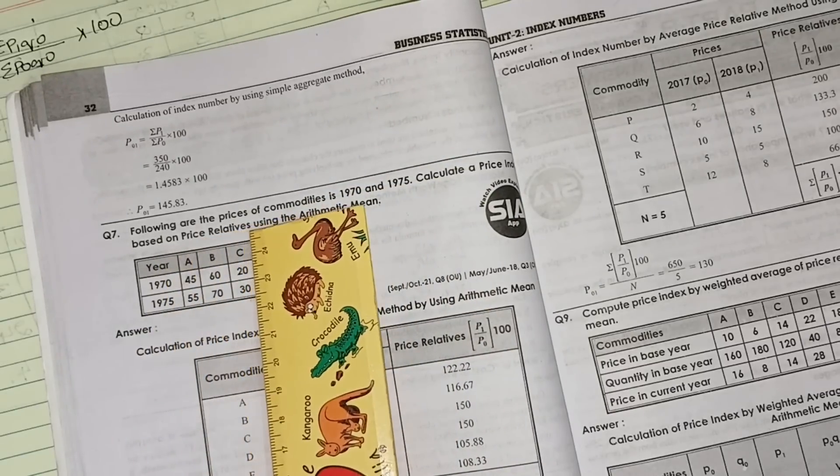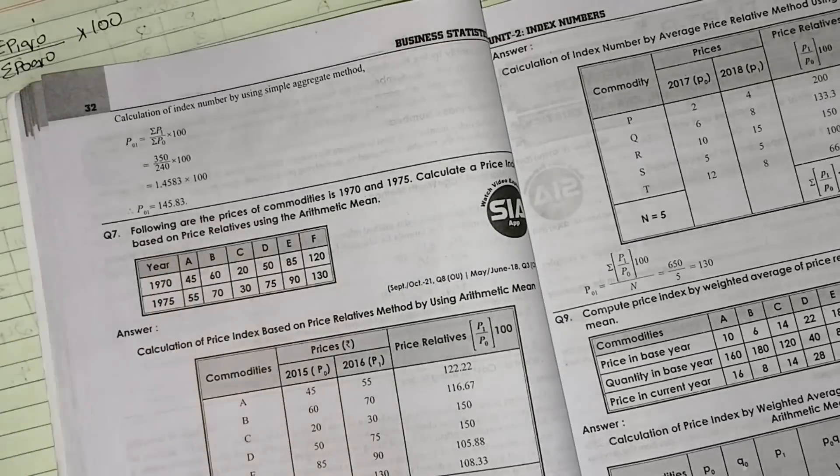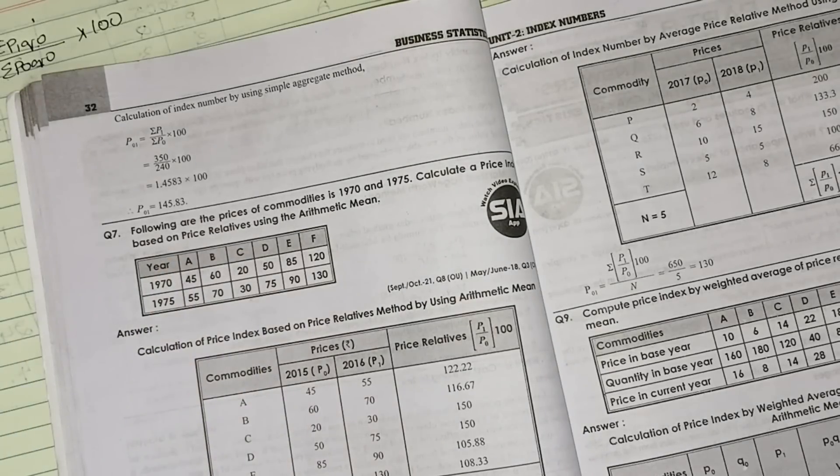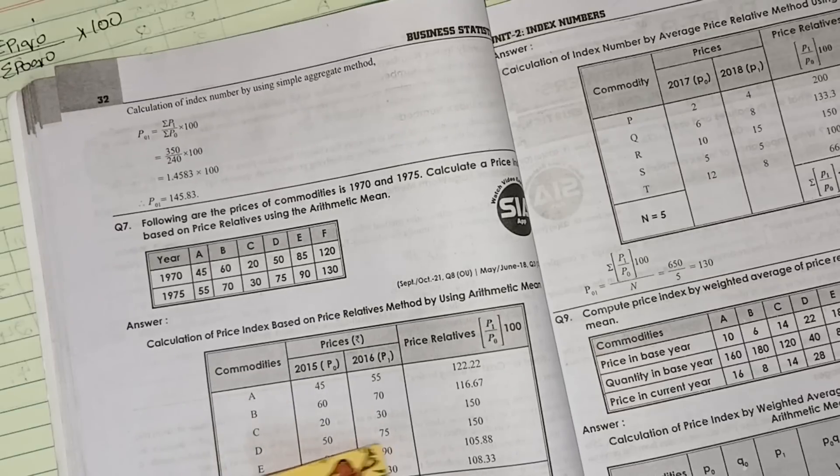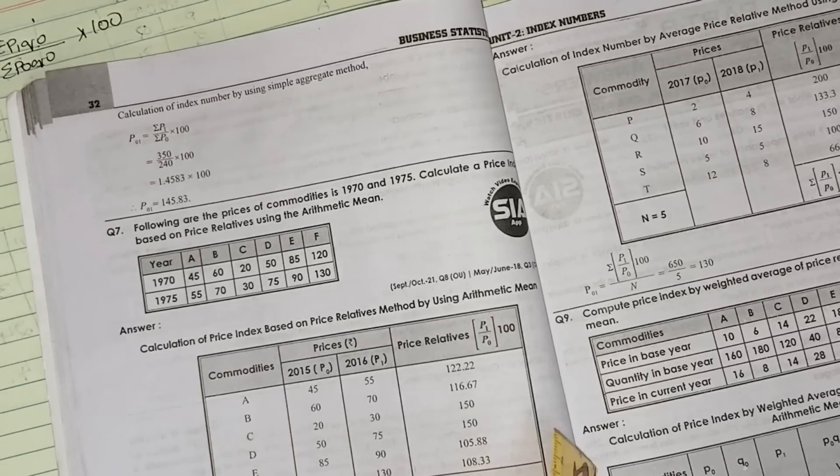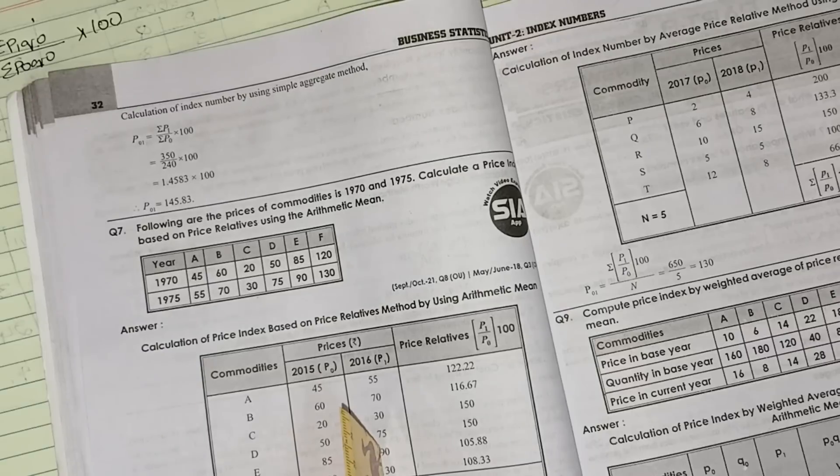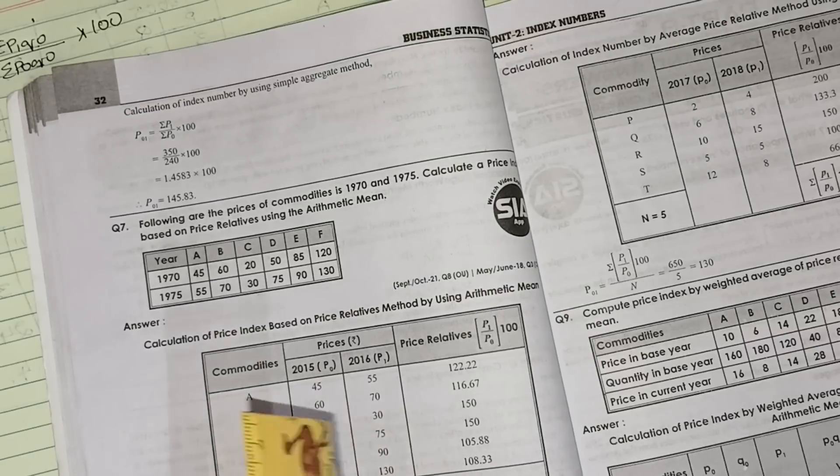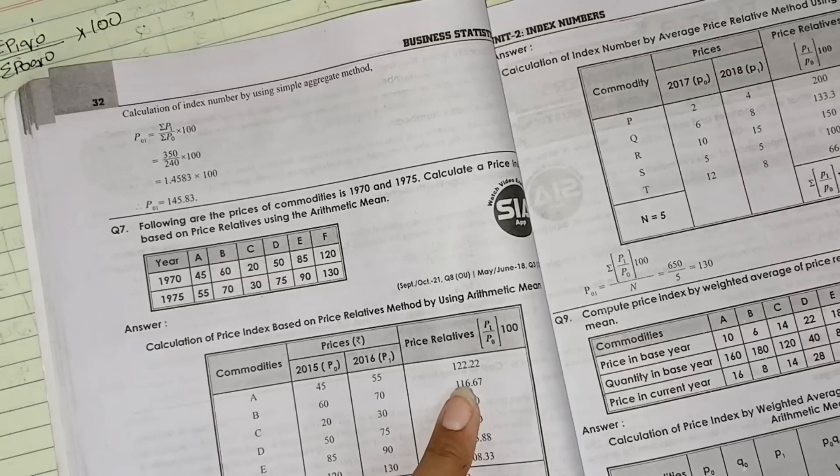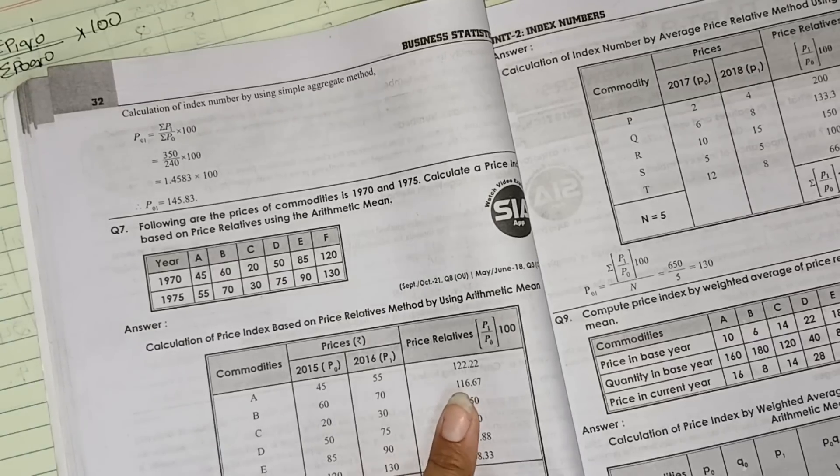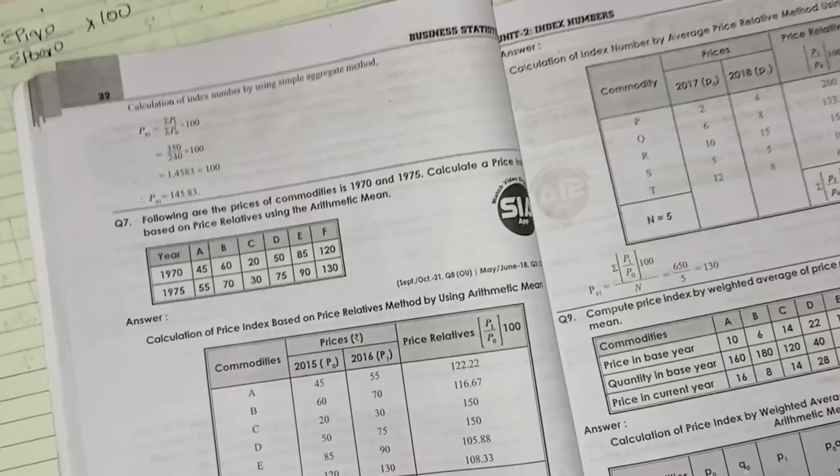Question number 17, they have given the price and commodities of 1970 and 1975, and they are asking to find out the price. Same thing, you need to enter all that P0, P1. Same formula, P1 divided by P0 into 100. 55 divided by 45 into 100 equals 122.22. 70 divided by 60 into 100, like that you need to do.